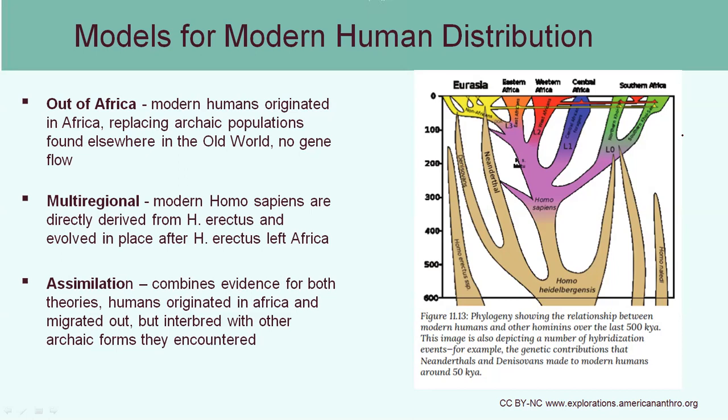The multi-regional hypothesis says that modern Homo sapiens are directly derived from Homo erectus and actually evolved after Homo erectus left Africa. So once they left, modern Homo sapiens would have evolved on those other continents such as Asia and Europe.